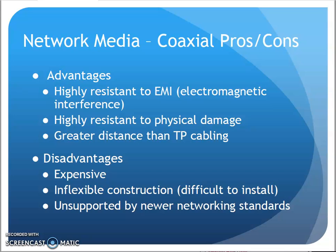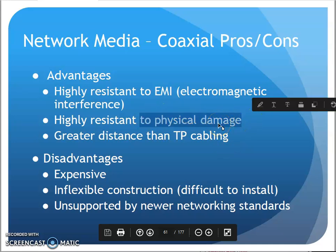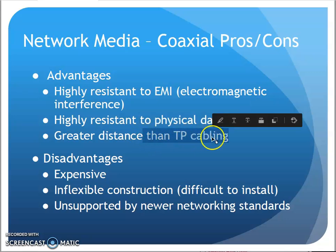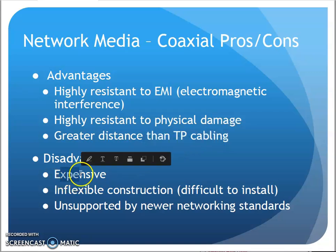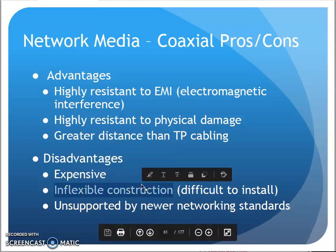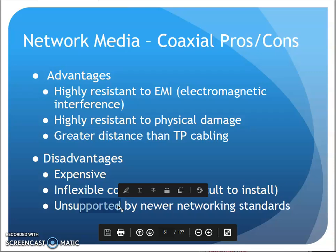The advantage to coax is that it's highly resistant to EMI — that shielding helps with noise resistance. It's a pretty durable cable that can take a lot of physical use before getting damaged. And it does have good distances versus twisted-pair cabling. It is kind of expensive and not exactly easy to install because of its thicker size and shielding. Our newer networking standards are not supporting coax — I'm not going to have an Ethernet network in a building using coax cable.